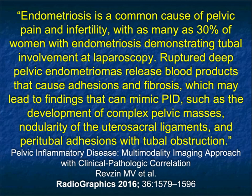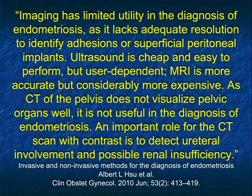Endometriosis is a common cause of pelvic pain. 30% of women with endometriosis demonstrate tubal involvement at laparoscopy. There are a number of pitfalls: ruptured deep pelvic endometriomas release blood products and can mimic PID or complex pelvic masses, raising concern for malignancy. Implants on the colon can simulate primary malignancies, and implants from endometriomas can obstruct the ureter, simulating ureteral tumors. Imaging has had limited utility in general, but can be very valuable.